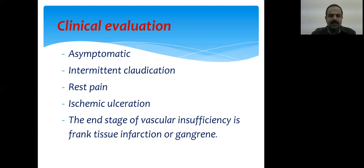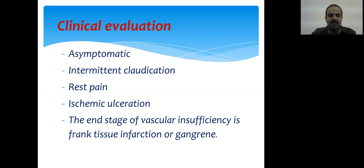The next possible presentation is intermittent claudication. This means the patient walks a long distance and develops pain in the leg due to arterial insufficiency. In the beginning the patient can walk, for example, one kilometer before pain occurs, but with time the claudication distance progressively decreases.